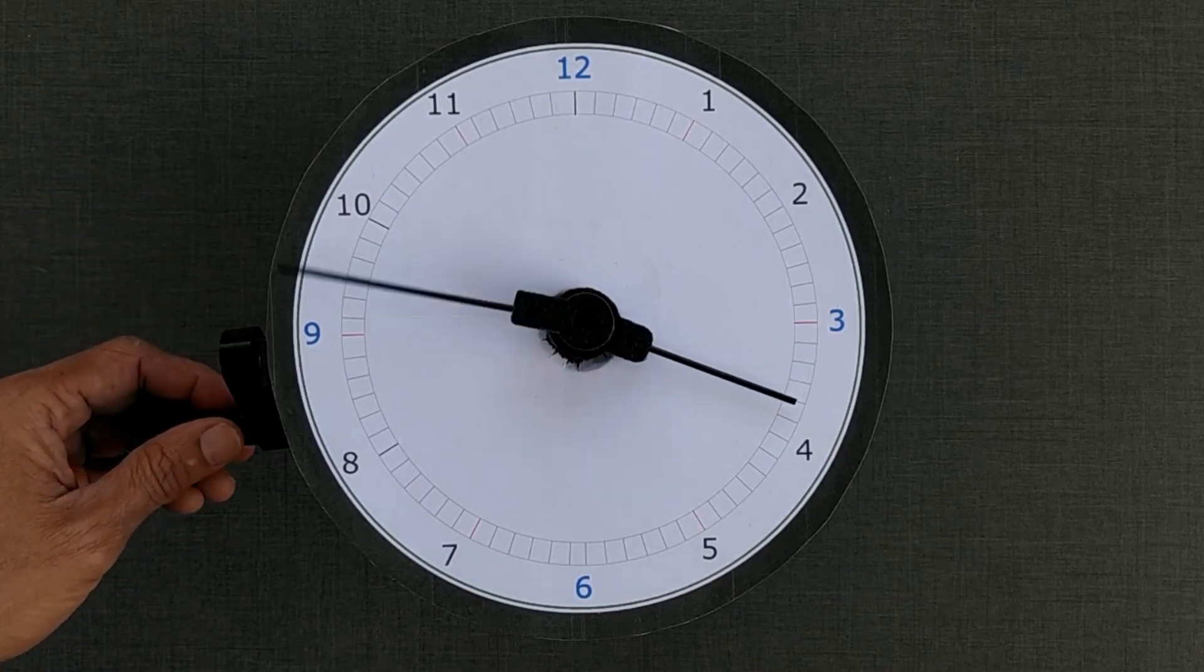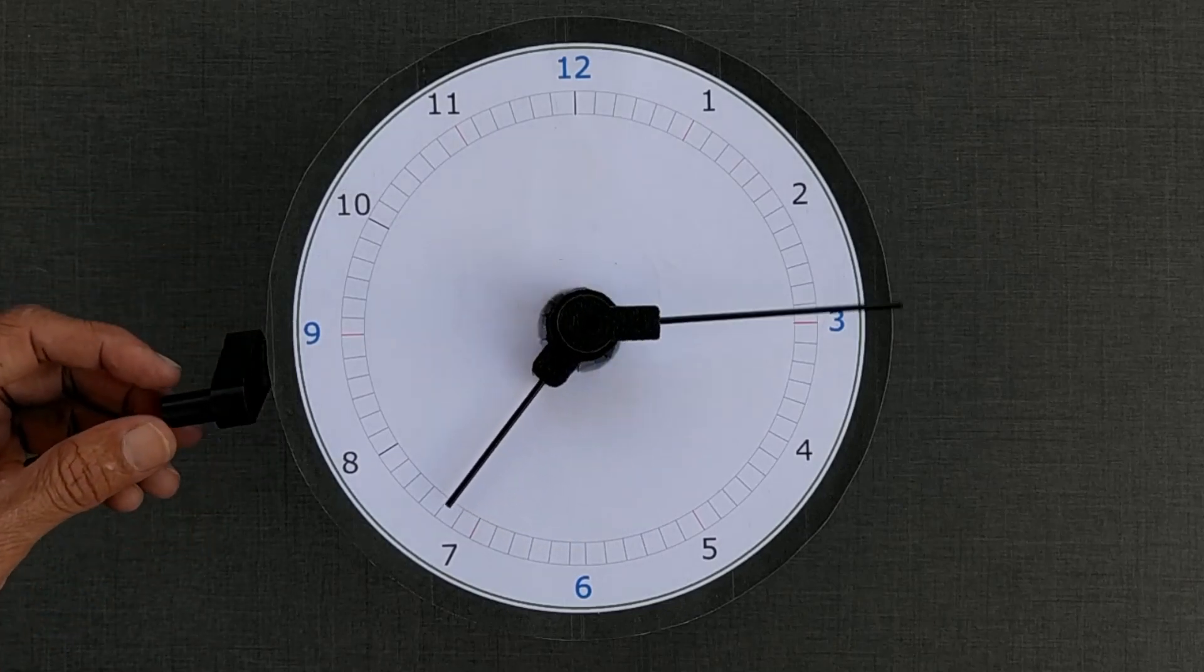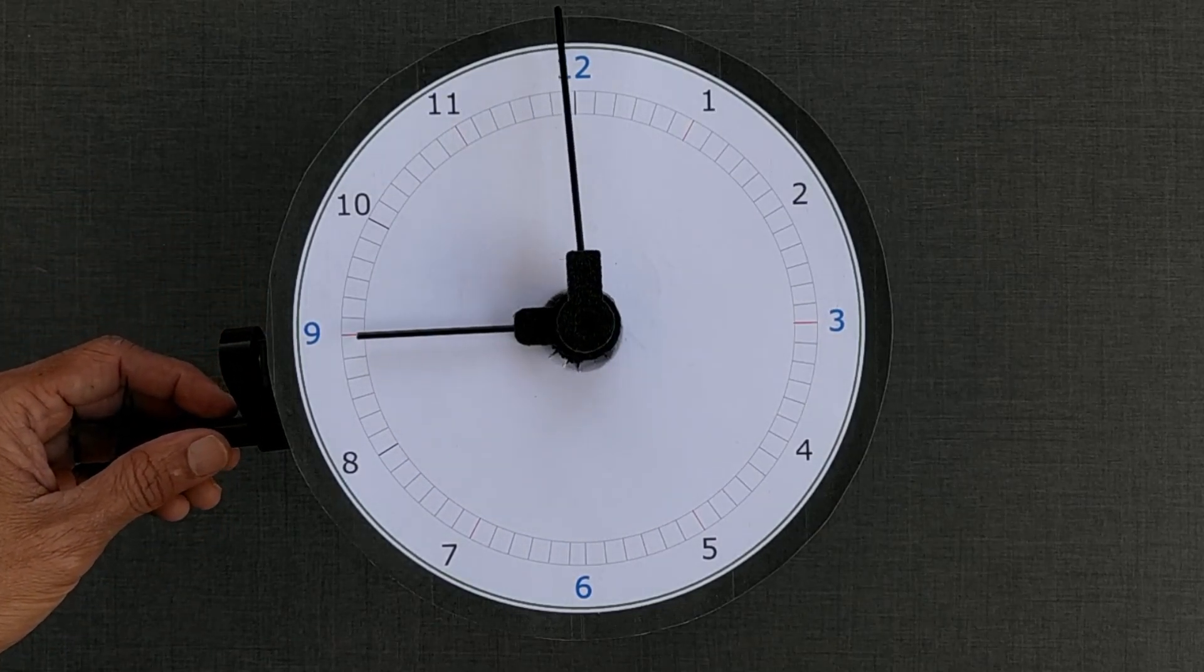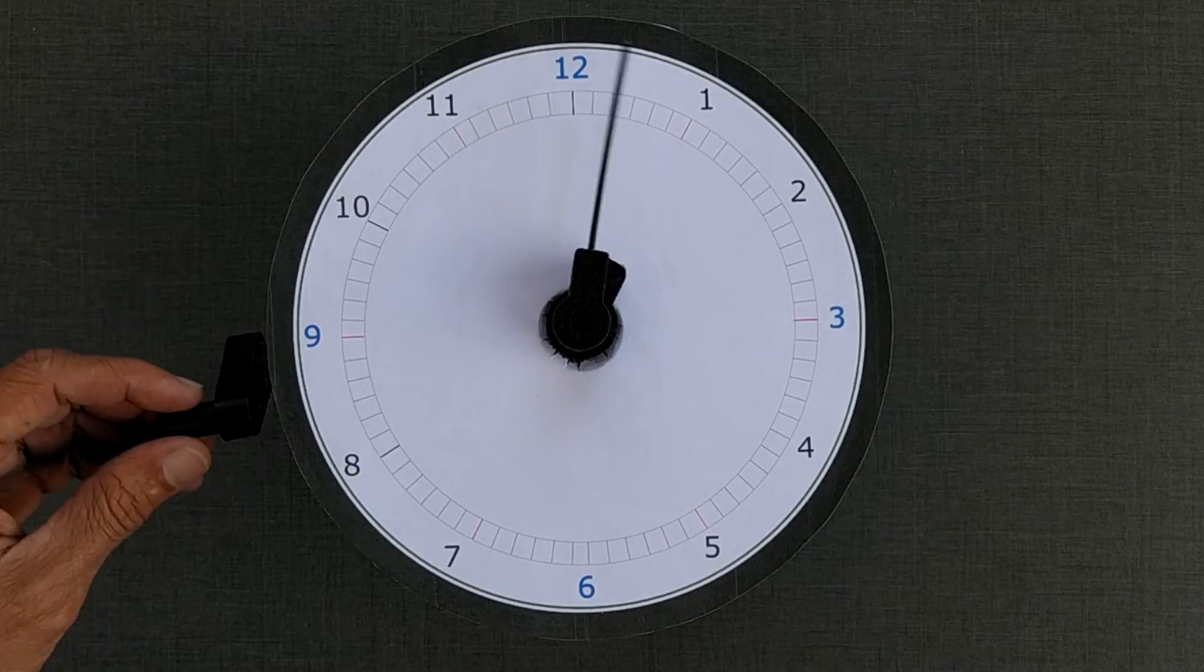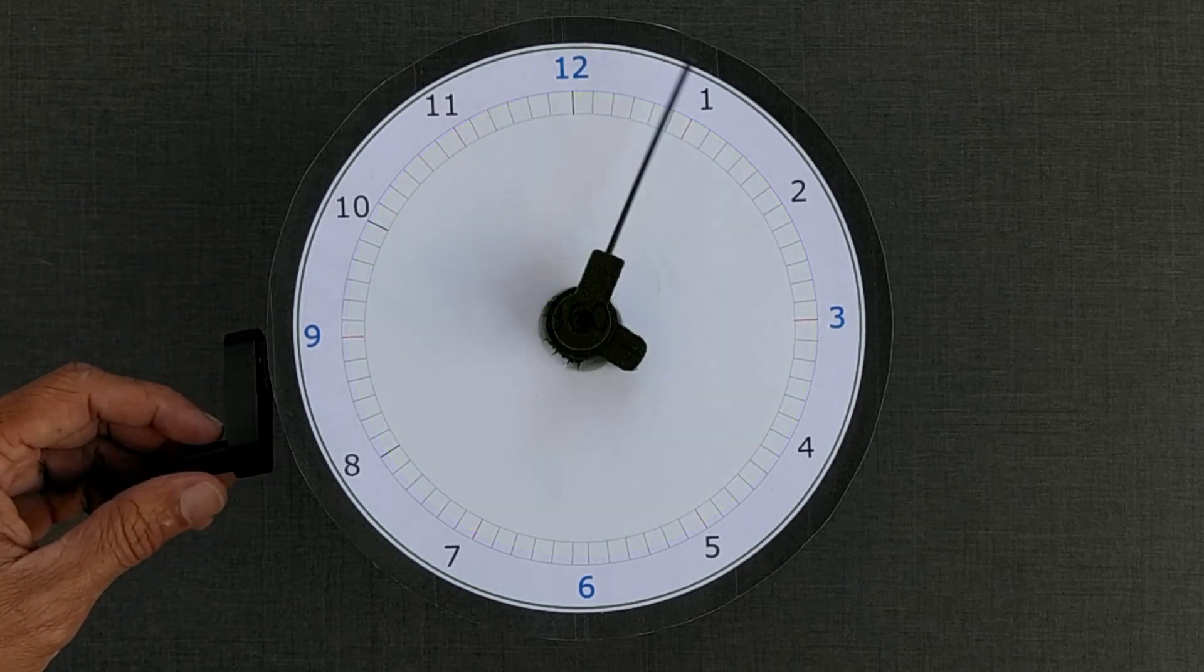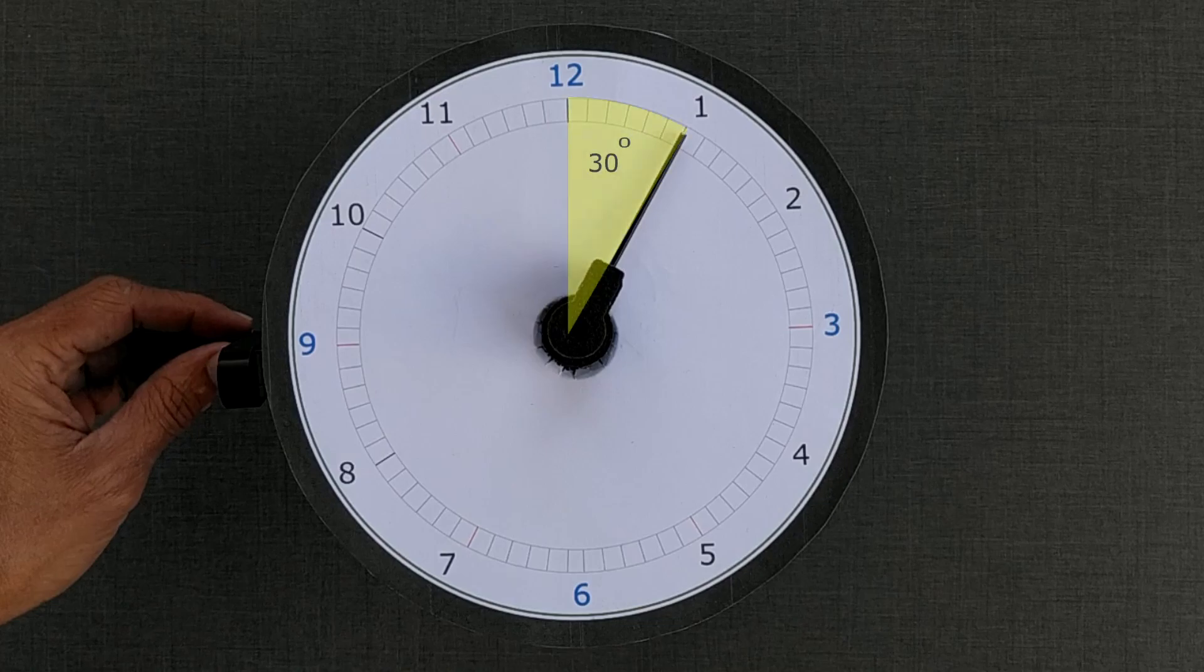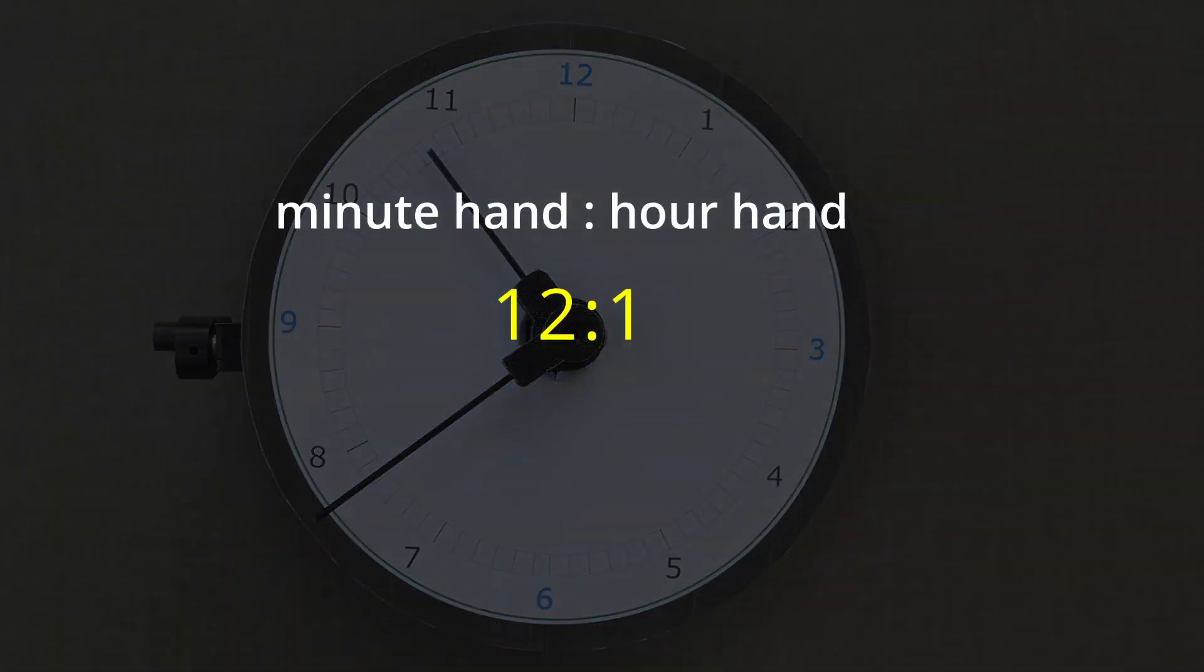Deciding about the gear ratios is the key to proper functioning of the clock. With one complete rotation of the minute hand, i.e. 60 minutes, the hour hand moves 1 hour. In terms of degrees, for every 360-degree movement of the minute hand, the hour hand moves 30 degrees. We need to design for the reduction ratio of 12 is to 1 between the two hands.